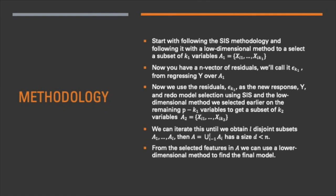We can keep on doing this until we get L disjoint subsets A1 to AL, whose union has size d, which is less than the sample size n.